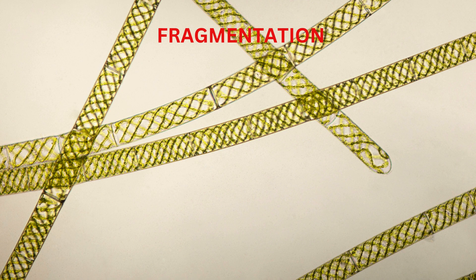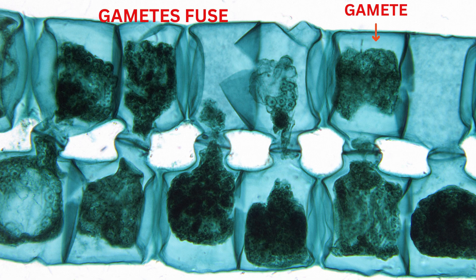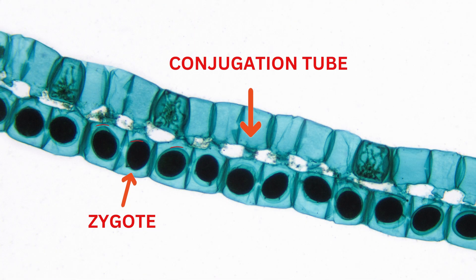Reproduction: Spirogyra reproduces both sexually and asexually. Asexual reproduction occurs through fragmentation, where a filament breaks into pieces and each fragment can grow into a new filament. Sexual reproduction involves the formation of specialized reproductive cells called gametes. The gametes fuse to form a zygote, which develops into a new filament.